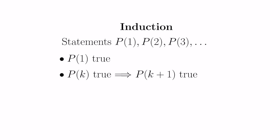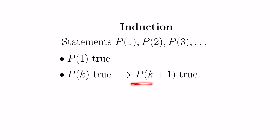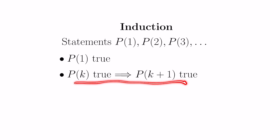We'll do a brief recollection of how induction works to set us up for induction in two variables. In mathematical induction, we have statements indexed by the positive integers — P(1), P(2), P(3), etc. The setup is: if you can prove that statement P(1) is true, and if you can prove that given the k-th statement is true the (k+1)-th statement is also true, then all statements are true. This creates a cascading effect all the way down the line.